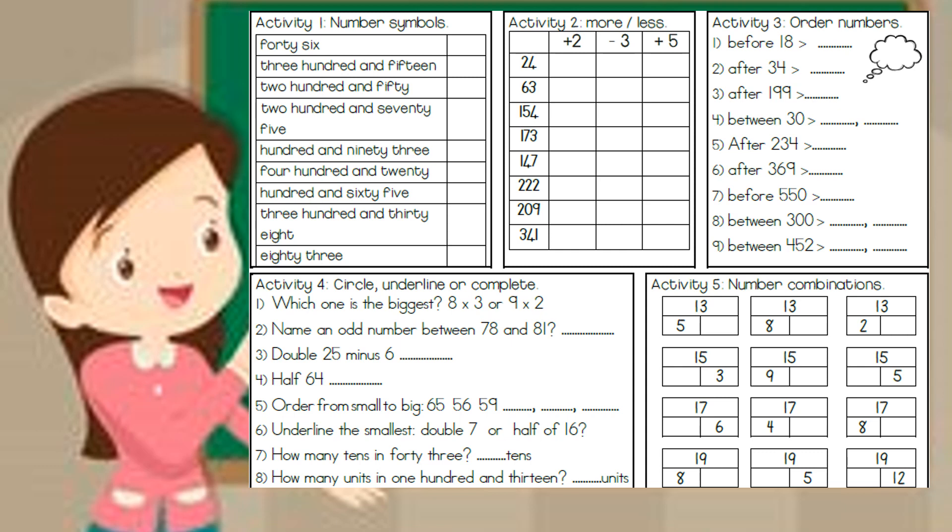Activity 4. Circle, underline or complete. Which one is bigger? 8x3 or 9x2? You cannot just guess. You need to go and work out the answer. Then decide which one is bigger. Number 2. Name an odd number between 78 and 81. Double 25 minus 6.